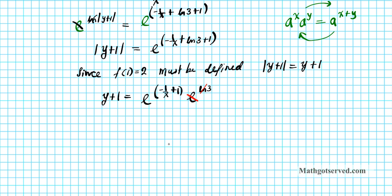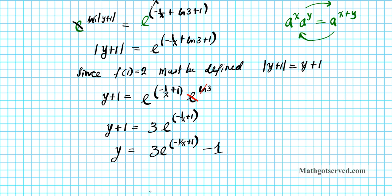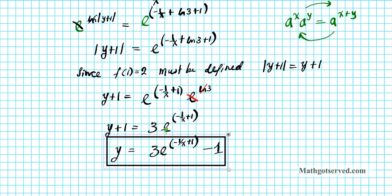So we have y plus 1 equals 3 e to the negative 1 over x plus 1. To finish this off, subtract 1 from both sides, since the particular solution must be in the form y equals. So y equals 3 e to the negative 1 over x plus 1, minus 1. And that's the particular solution of the differential equation with the initial condition f of 1 equals 2.